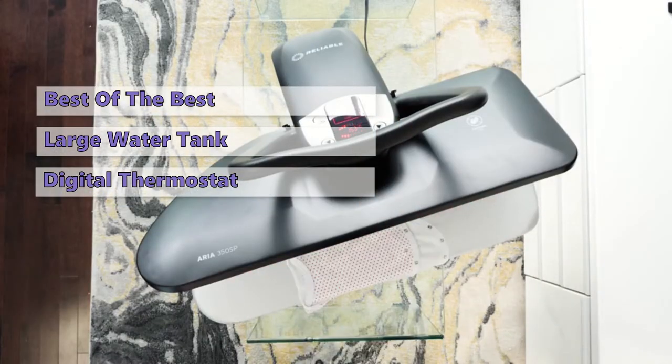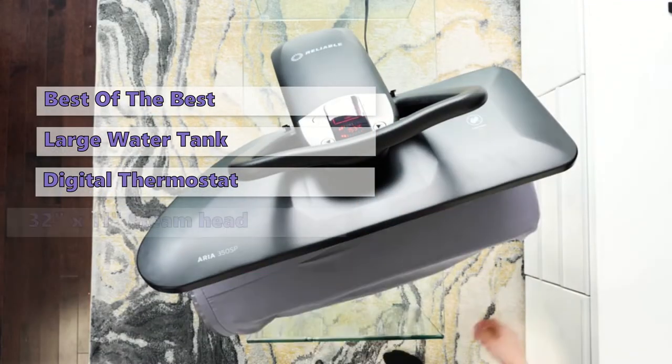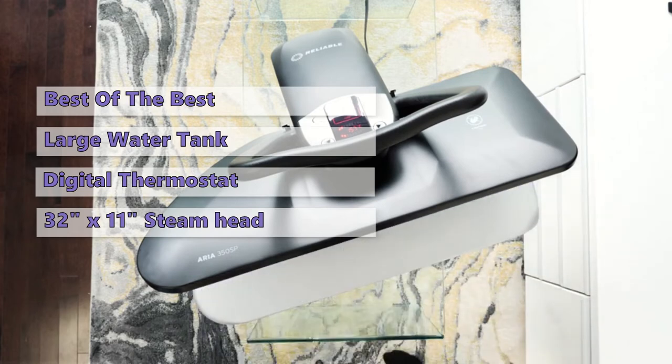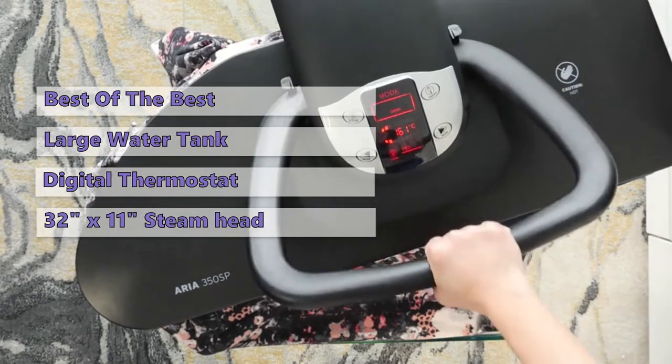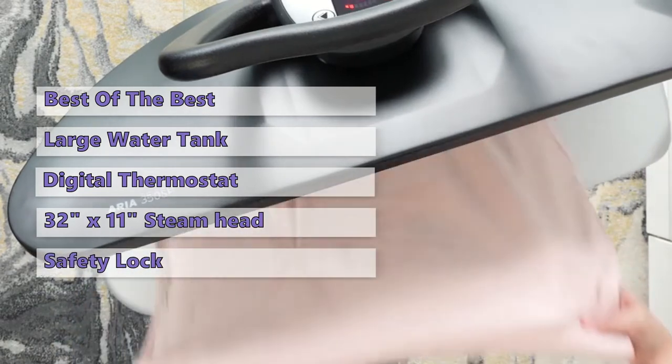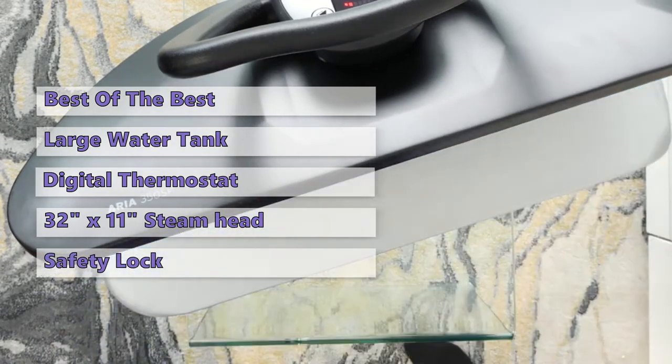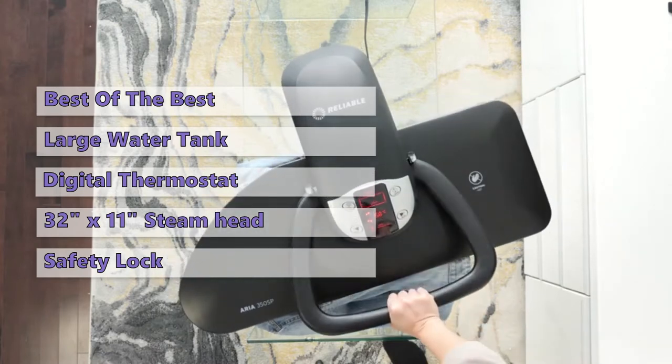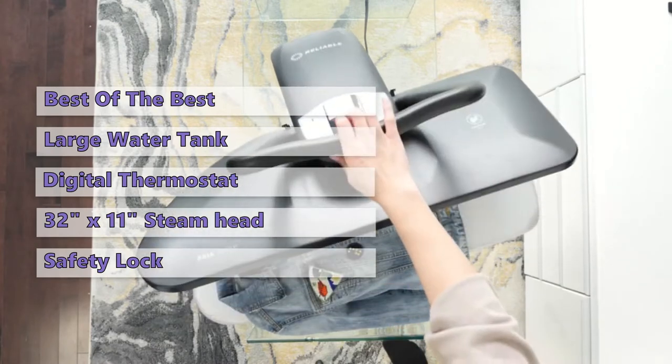The Aria 350 SP has a 32 by 11 inch steam head that produces great volumes of steam, and it has a childproof safety lock that prevents any unintentional usage of the press. If you need a powerful, stylish, and innovative steam press, you should go with the Aria 350 SP.